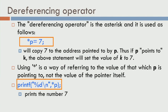Let us look at the dereferencing operator. It is the asterisk symbol, and when you say star p equals 7, it takes the value 7 and copies it to the address pointed to by p. If p points to k, then that statement will actually change the contents of k to 7 as well. This dereferencing is a technical term you will see used later in the lecture.